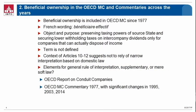The object and purpose is to preserve taxing powers of the source states and secure lower withholding taxes on intercompany dividends only for companies that can actually dispose of income. We are only dealing with intercompany dividends. The fact that a company then passes a dividend on to another company or to the shareholder is normal. If we have a company paying and a company receiving, as long as the receiving company has no contractual or otherwise equivalent factual obligation to pass the dividend on the day it receives it, that does not per se create problems.